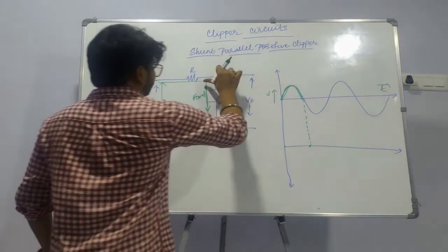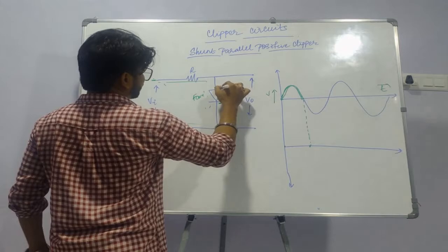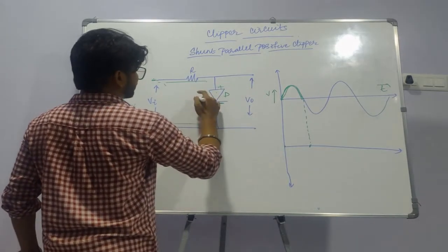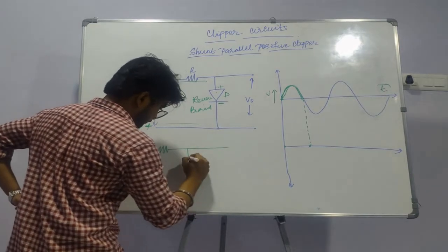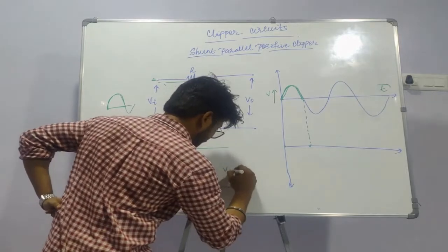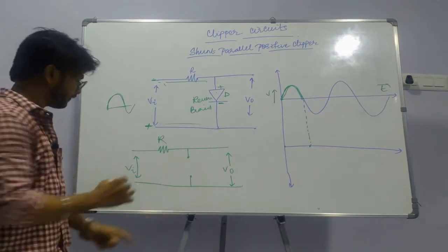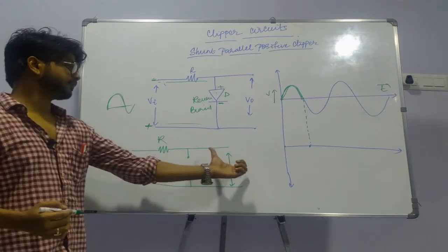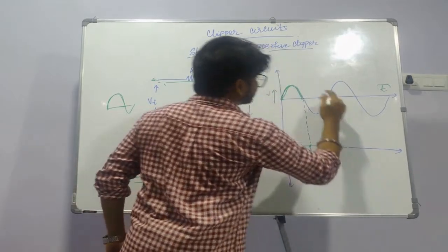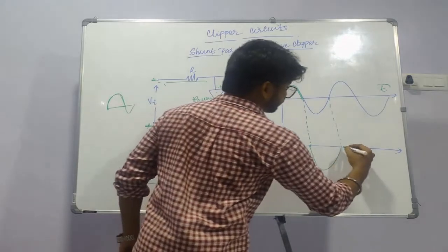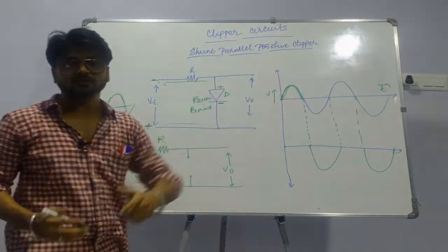In the negative half cycle, this becomes negative and this becomes positive. The negative is connected to the positive terminal of the diode and positive to the negative terminal, making it reverse biased — it behaves as an open circuit. Whatever the input is, the same is the output. The negative half cycle is present as it is. The positive half is clipped away and the negative is present — this is the shunt parallel positive clipper.